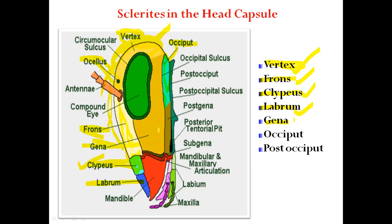The gena is the lateral or cheek region of the insect head, which lies below or behind the compound eyes. This region bears a cavity called the mouth cavity.